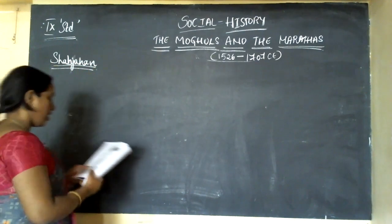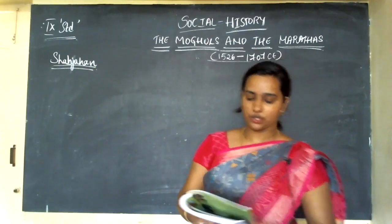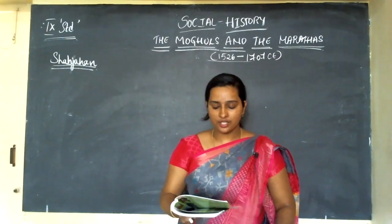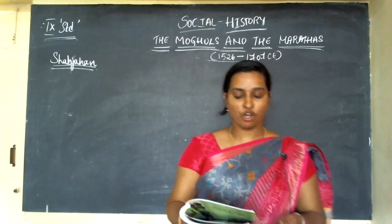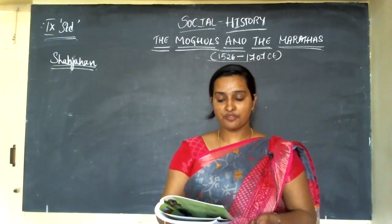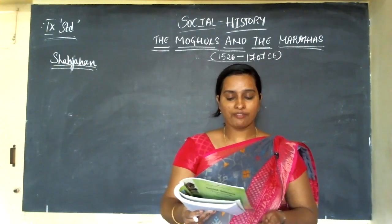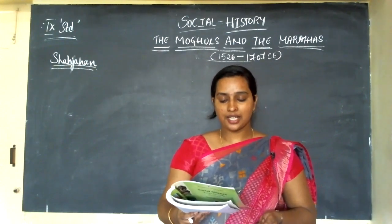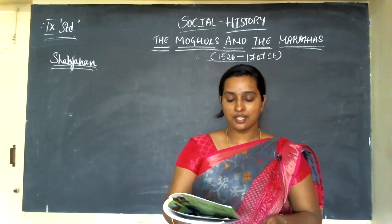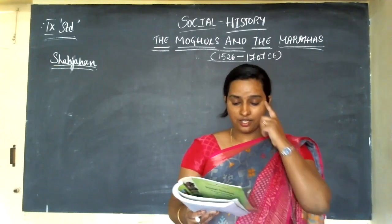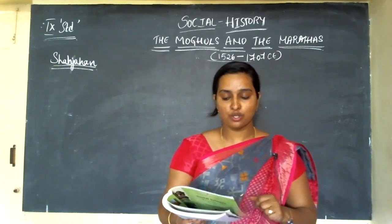During the regime of Shah Jahan, the Mughal invasions on South India continued. The noble Khan-i-Jahan Lodi of Afghanistan rebelled against him and got defeated. Shah Jahan also defeated the Portuguese in 1632 CE and annexed Hugli from them, and he took Ahmadnagar under his control. However, his relationship got spoiled with the Bundelas.